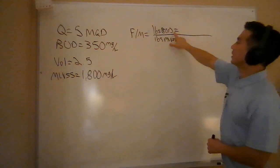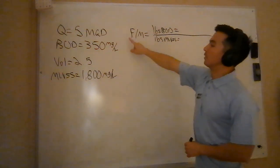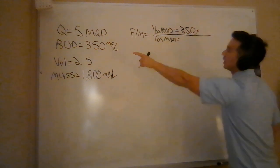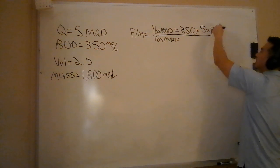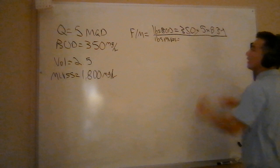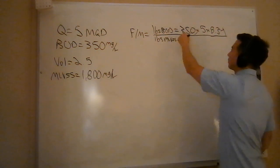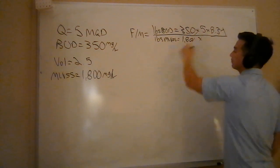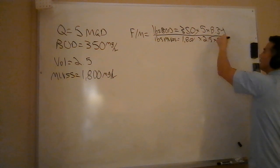So in this case, what am I looking up top? I'm looking at the food, food to microorganisms. So what do I got? I've got a concentration of 350. I've got a volume of five. And of course, the weight of water, 8.34 pounds per gallon. What do I got for my microorganisms? I've got a concentration of microorganisms of 1,800 milligrams per liter. I've got a volume of 2.5 million gallons times, of course, the weight of water.